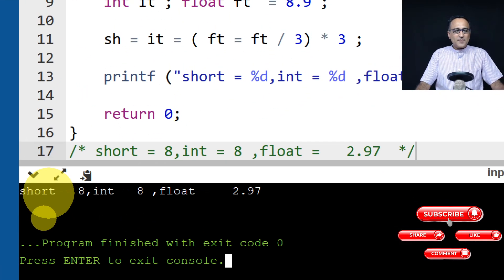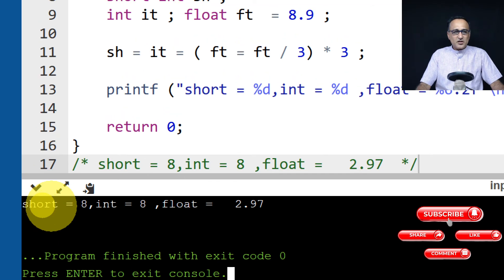So here if you see, short as mentioned turned out to be 8. Float here turned out to be 2.97 because 8.9 divided by 3 was 2.97, which got assigned here. 2.97 into 3 is 8.9 something like that.